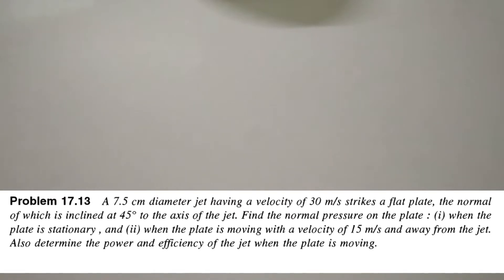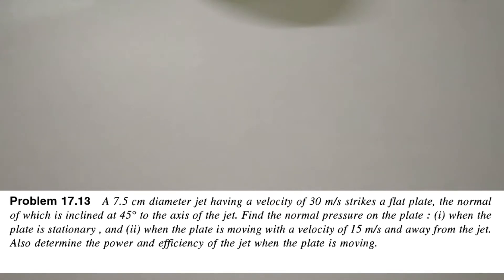Now we will do a problem. I will read out the question for you. A 7.5 centimeter diameter jet having a velocity of 30 meter per second strikes a flat plate, the normal of which is inclined at 45 degrees to the axis of the jet.